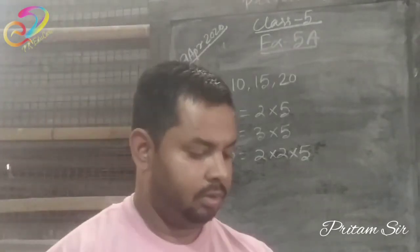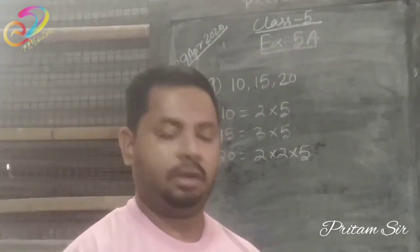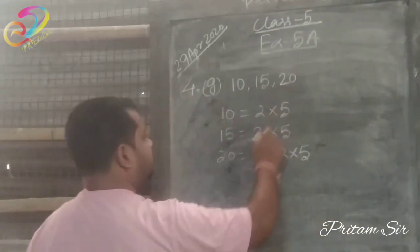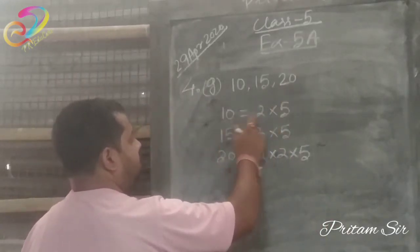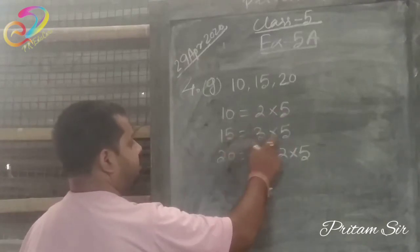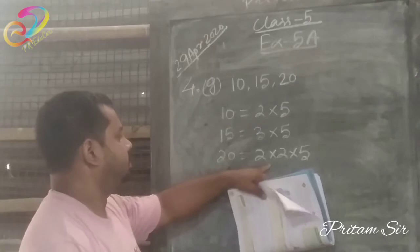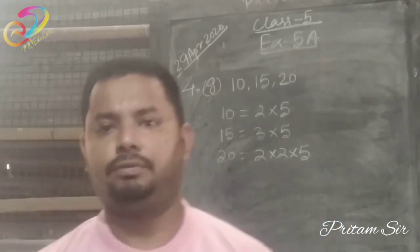Now let's see question number 4G: 10, 15, and 20. The factors of 10 are 2×5, factors of 15 are 3×5, factors of 20 are 2×2×5.